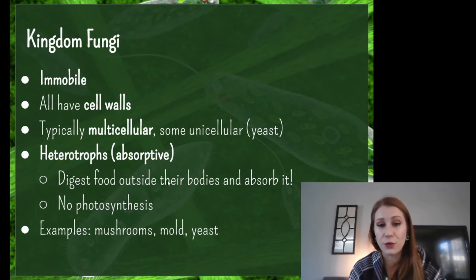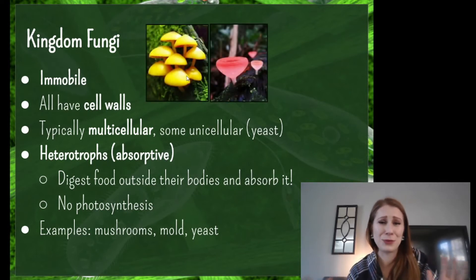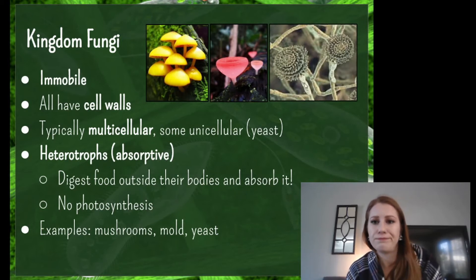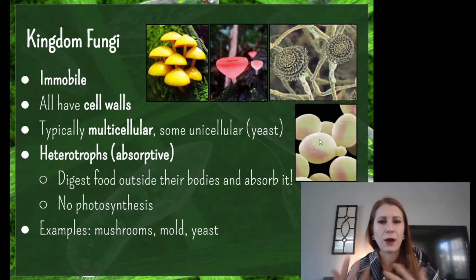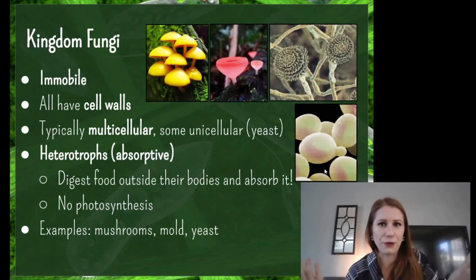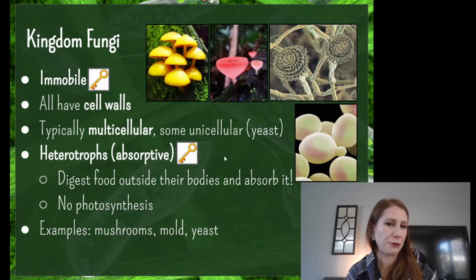Funguses cannot use photosynthesis — if you think something is a fungus but it can photosynthesize, it's a plant. Over here we've got some examples of mushrooms, which come in some crazy colors, though the ones at the grocery store are usually white or brown. We've got a mold and a yeast — yeast is what you use to make bread and beer. During COVID, I made some bread using yeast — makes it really delicious. Our keys for fungi: they are immobile and they are absorptive heterotrophs, meaning they absorb nutrients from the world around them rather than eating or making their own food.